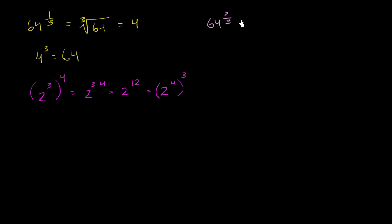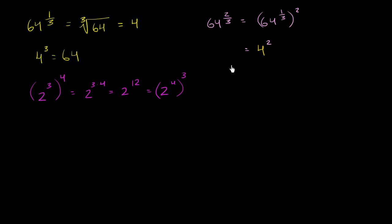If I raise something to a power and then raise that whole thing to a power, it's the same as multiplying the two exponents. So we can use that property here: 2/3 is the same as 1/3 times 2. We could say 64 to the 2/3 is the same as 64 to the 1/3 power, and then that thing squared — raising to a power and then raising that to a power, multiplying gives 2/3.